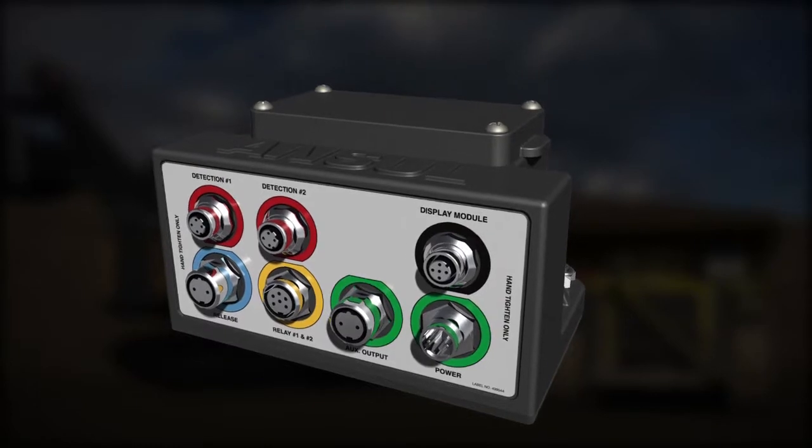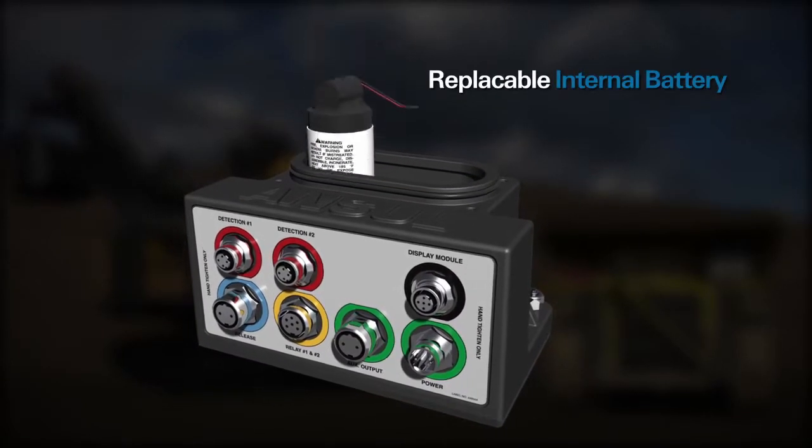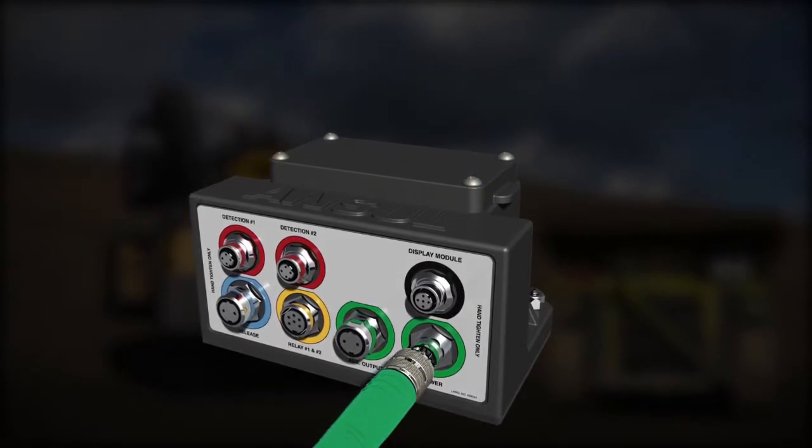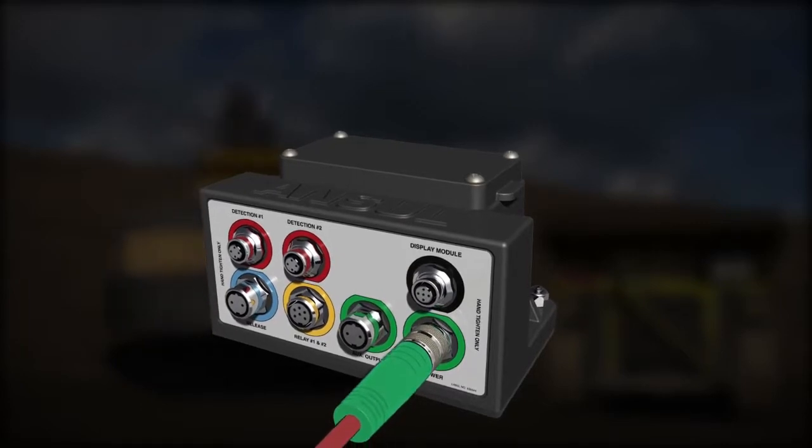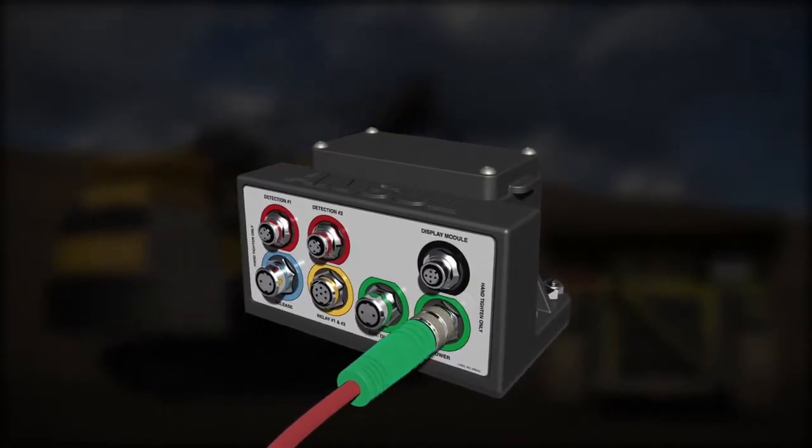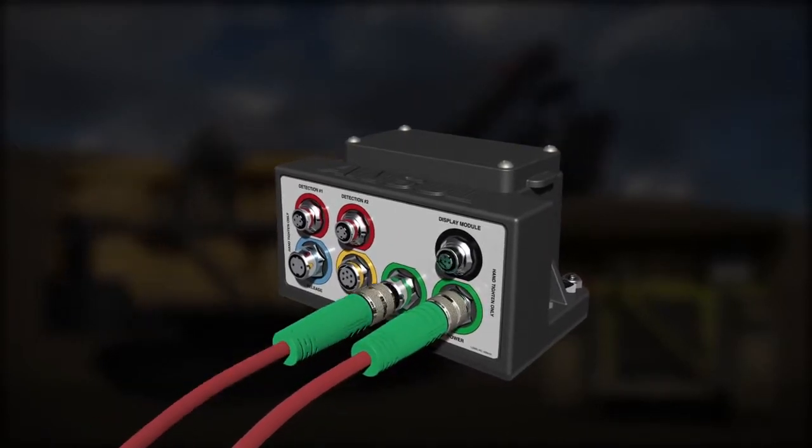A replaceable internal battery powers the CheckFire 210 system. The system can also be connected directly to the vehicle for external power or used in combination with the internal battery for a dual power source. The auxiliary output provides power when external power is connected.